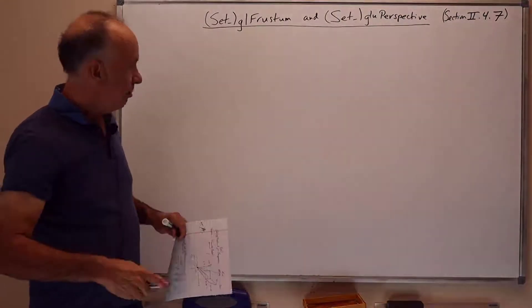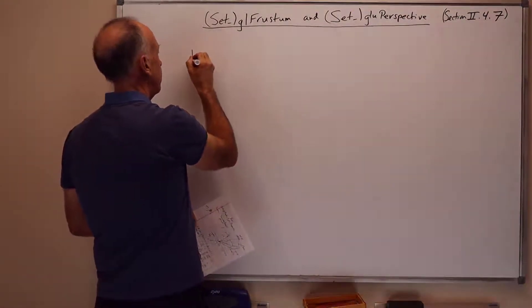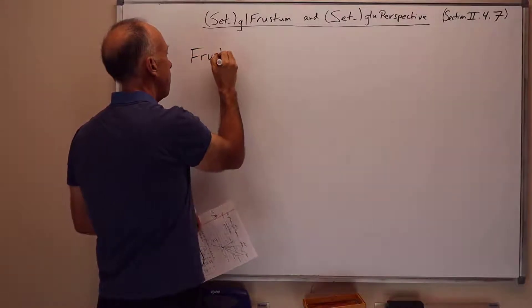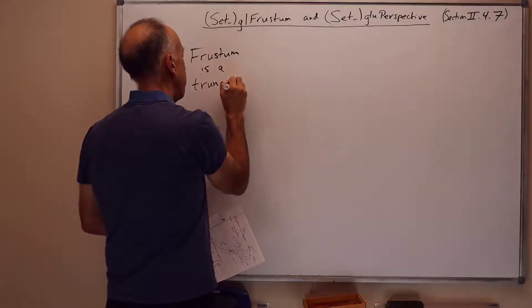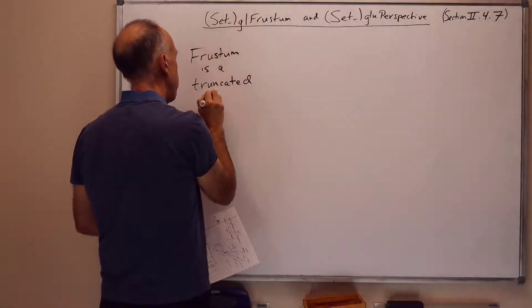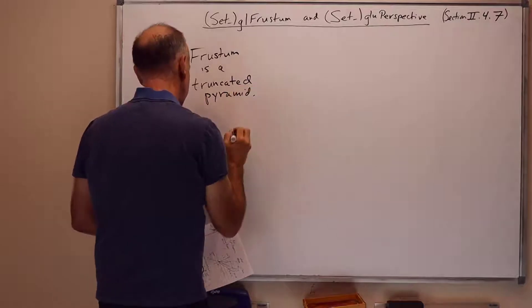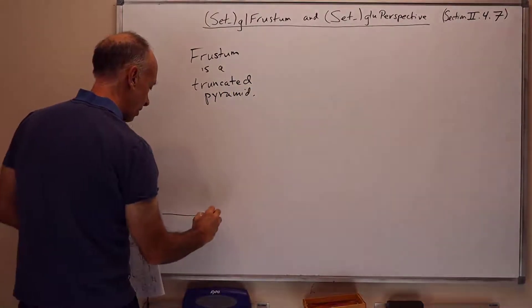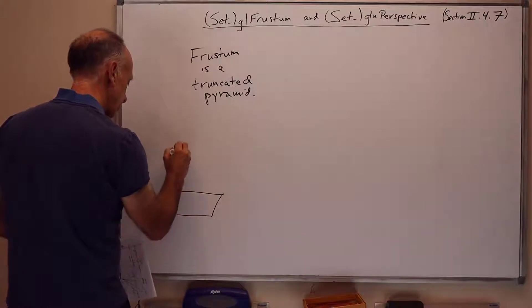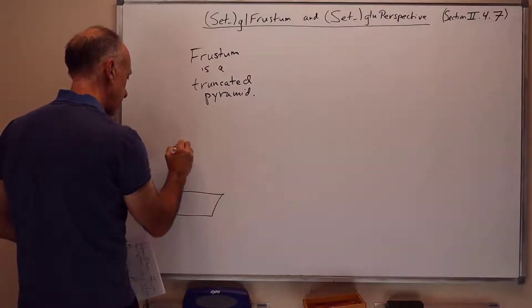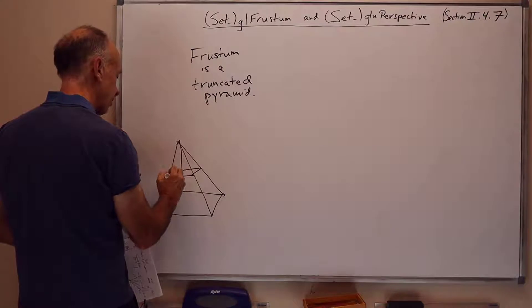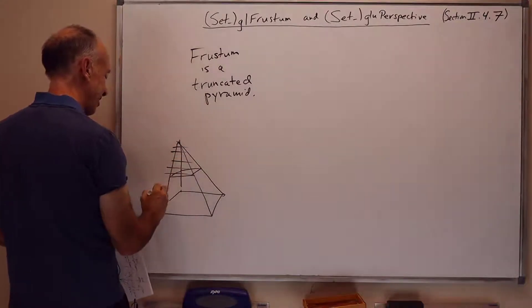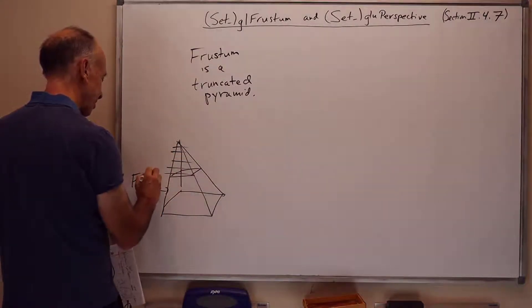The more general command is gl-frustum. A frustum is a truncated four-sided pyramid. The picture of a pyramid, we can think of here as a square base for a pyramid. It's got sides coming up to the peak. And if we slice off the top, if we remove this part here, the bottom part is the frustum.